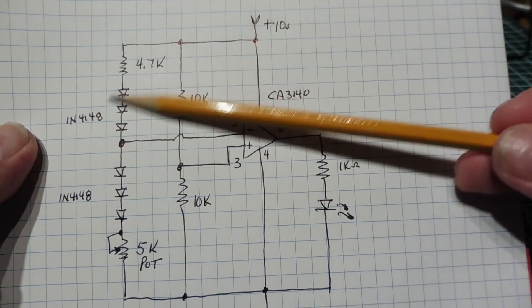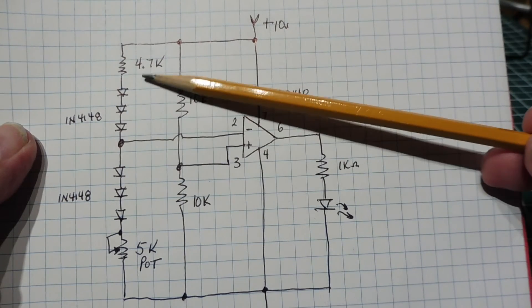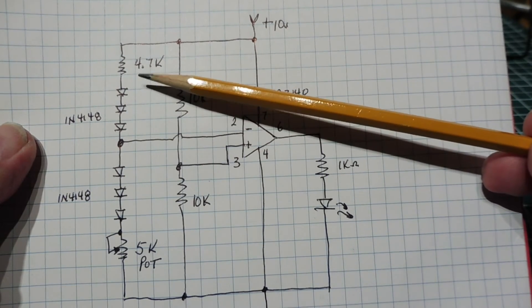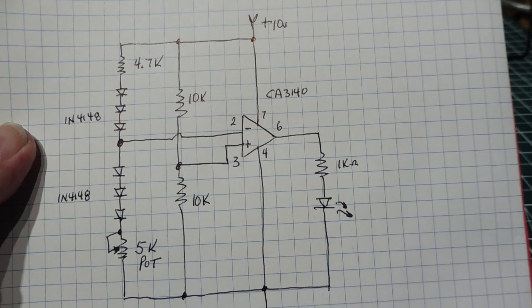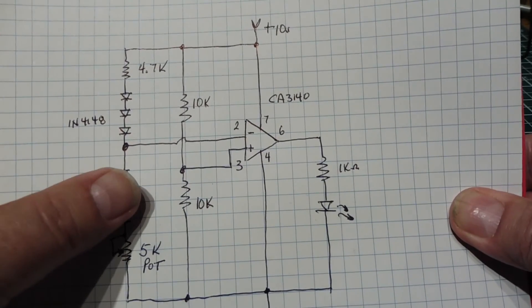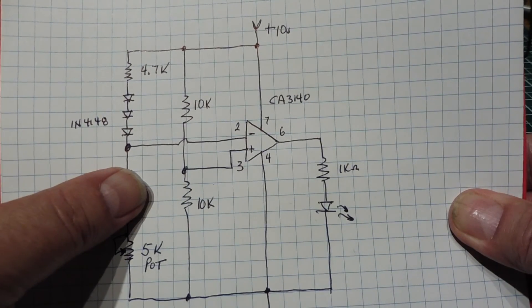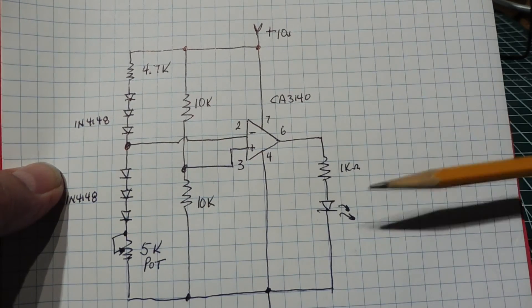We can see how the compensation diodes track the ambient temperature of the room, and only when we put our finger or apply heat to the bottom three diodes will it trigger the circuit and turn on the LED.